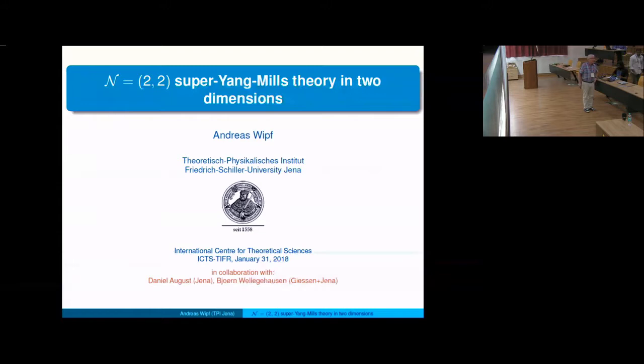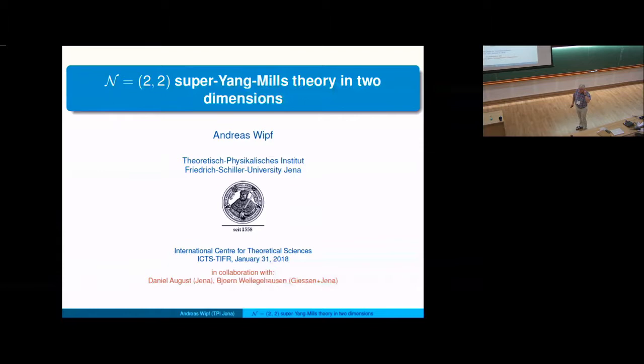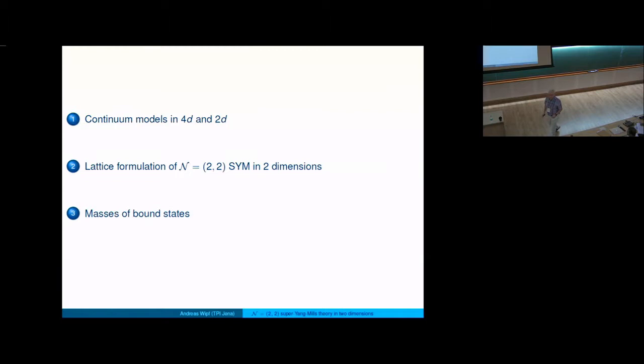Welcome back. This talk — I changed the title a little bit — I will emphasize here more the two-dimensional theories and the results we got last year. This was a collaboration with Daniel August, who just did his PhD thesis, and Johann Velgehausen, a senior postdoc in my group. I will briefly discuss the reduction from four to two dimensions, the essential steps emphasizing the relevant symmetries, then present the lattice formulation used in our simulations, and show results about the Ward identities and in particular the mass spectrum of the theory.